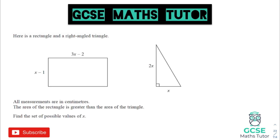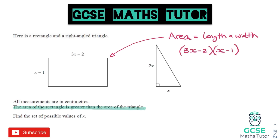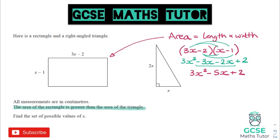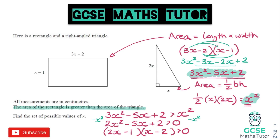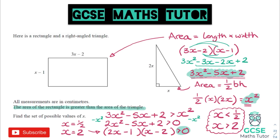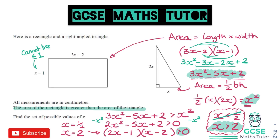If you have a harder question with quadratic inequalities — for example where it says the area is greater than another — write down your formulas, work out algebraic expressions for both, and put your inequality symbol in the correct direction. Set it equal to zero, factorize, solve to find your solutions, and then substitute back to check which solution works for the given context.